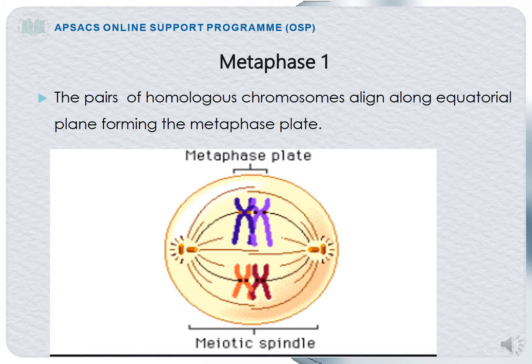Moving to Metaphase I: as in mitosis, the chromosomes line up to form a metaphase plate. In Metaphase I of meiosis, the chromosomes also align, but the key difference is that they are in pair form — homologous pairs align together. In mitosis, chromosomes align singly, but in Metaphase I they form pairs, which then attach themselves to the spindle fiber at the point of the kinetochore.